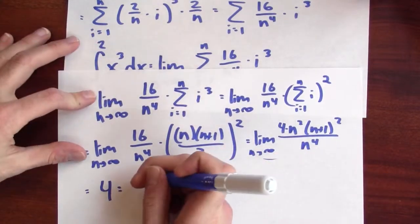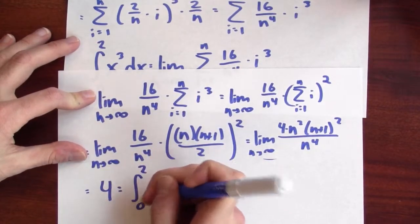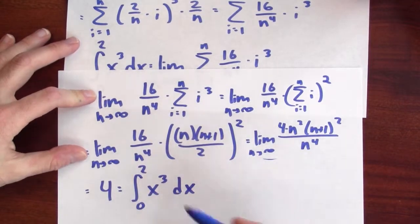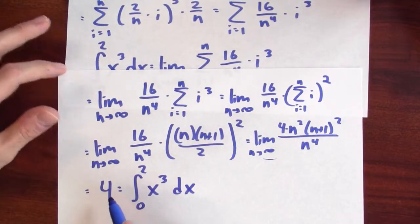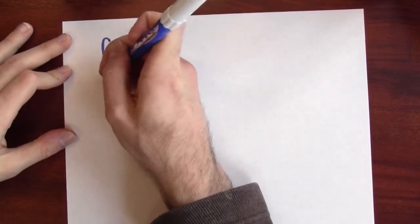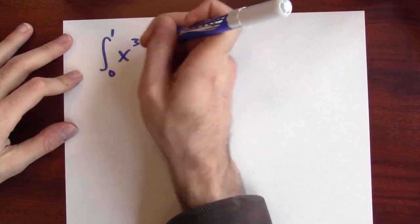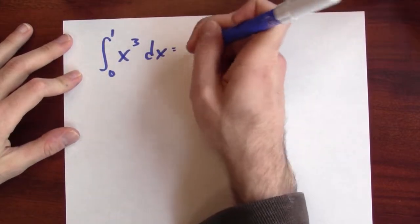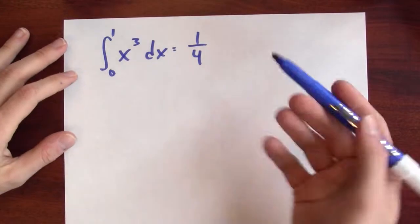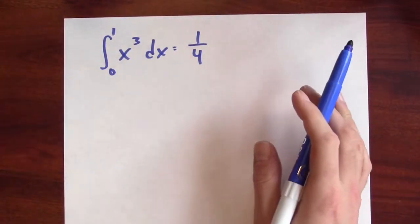And that is in fact the integral from 0 to 2 of x cubed dx. That integral is therefore equal to 4. Now what if I wanted to do this integral over some other interval? Well, I could repeat the same kind of calculation to deduce that the integral from 0 to 1 of x cubed dx is equal to a quarter. But that would be another whole calculation that I'd have to work out.